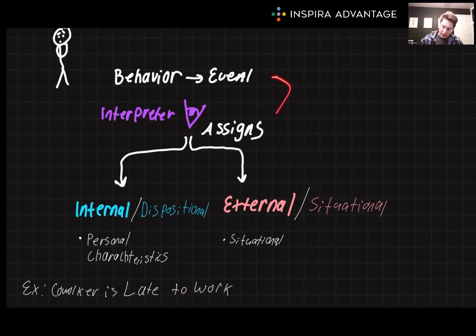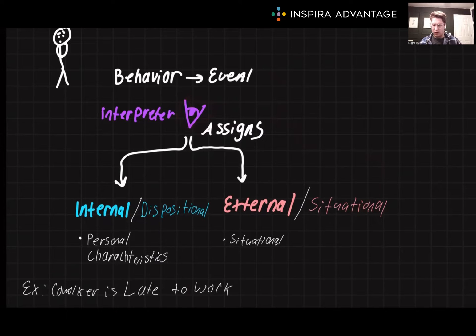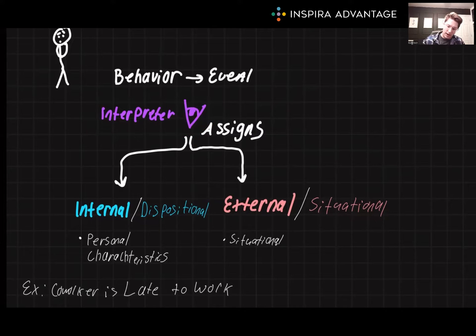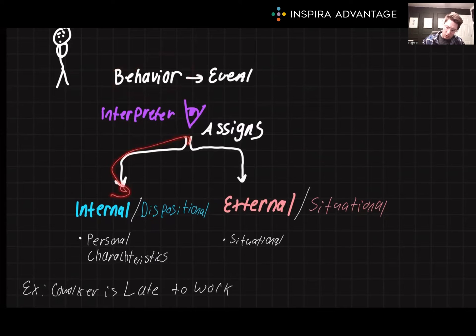In this diagram I drew here, you're going to notice a weird little eye in pink — the interpreter. This is really important, because somebody has to be observing the behavior, and that's who's going to assign the behavior they witnessed to either an internal or an external disposition.